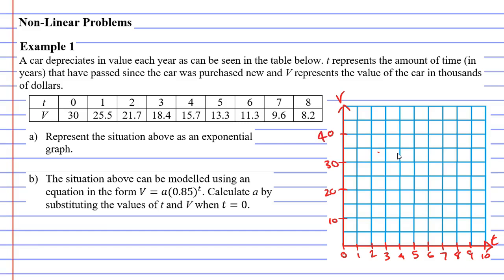Let's now label each point. Looking at our first column, where T is 0 and V is 30, we label that just here. When T is 1, V is 25.5. When T is 2, V is 21.7. When T is 3, V is 18.4. When T is 4, V is 15.7. When T is 5, V is 13.3. When T is 6, V is 11.3. When T is 7, V is 9.6. And when T is 8, V is 8.2.